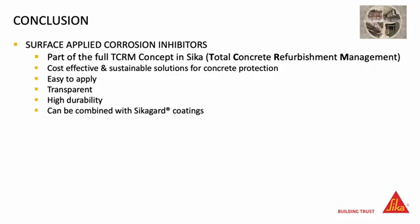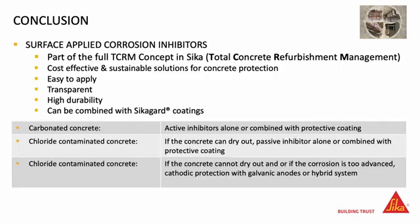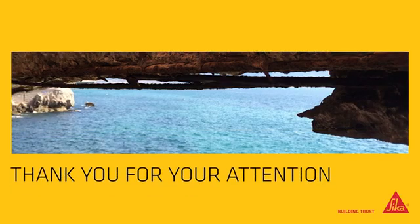To conclude, the surface-applied corrosion inhibitors presented in this video are part of the full total concrete refurbishment management concept in CECA. They can be a cost-effective and sustainable solution in certain conditions. The selection of inhibitor types can be summarized as follows: for carbonated concrete, active inhibitors such as CECA Ferragard 903 Plus can be used alone or combined with CECA Guard protective coatings. For chloride-contaminated concrete, when the concrete can dry out, passive inhibitors such as CECA Guard 705L or CECA Guard 706 Thixo can be used. And when the concrete cannot dry out, or if the corrosion is too advanced, then cathodic protection should be considered. Thank you for your attention.